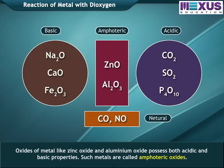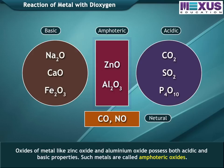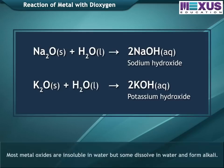Oxides of metals like zinc oxide and aluminium oxide possess both acidic and basic properties; such metals are called amphoteric oxides. Most metal oxides are insoluble in water, but some dissolve in water and form alkali.